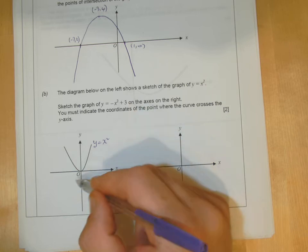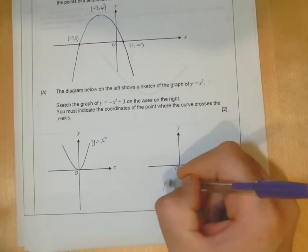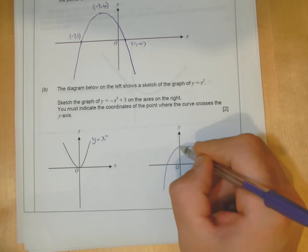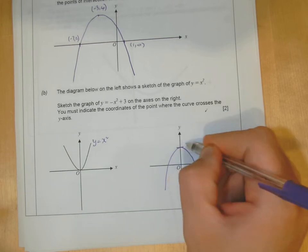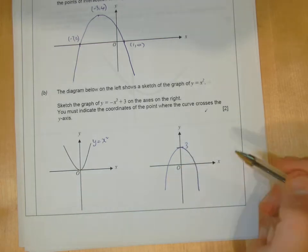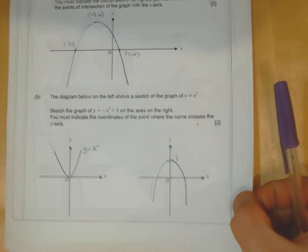But then it says plus three as well, so you need to move it up three. So you're going to end up like this here. And it says indicate where the curve crosses the y axis as well. Well, it's going to be three there, about c there.